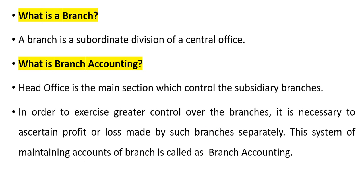The head office is the main section that controls the remaining branches in the area. To find out whether each branch is in profit or loss, the head office has to maintain some accounts. These accounts, this system of maintaining accounts of the branches to find profit and loss made by the branches separately, is called branch accounting.